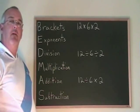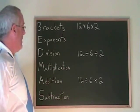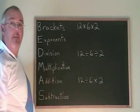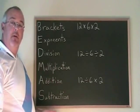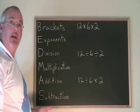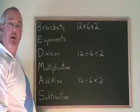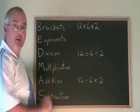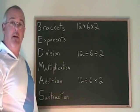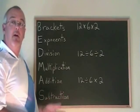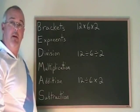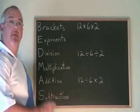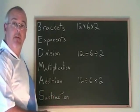Now let's look at the division and multiplication part of BEDMAS. Division and multiplication are like addition and subtraction — you don't have to do division first all the time. They're actually in a tie. And how do you break that tie? In the same way: you do the one that appears further to the left first.